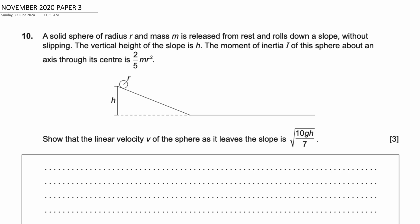A solid sphere of radius r and mass m is released from rest and rolls down a slope without slipping. The vertical height of the slope is h. The moment of inertia I of the sphere about an axis through its centre is 2/5 mr².